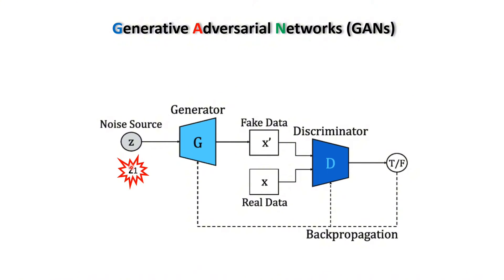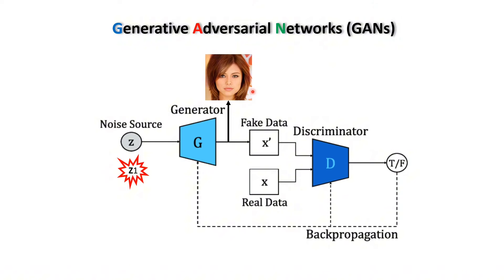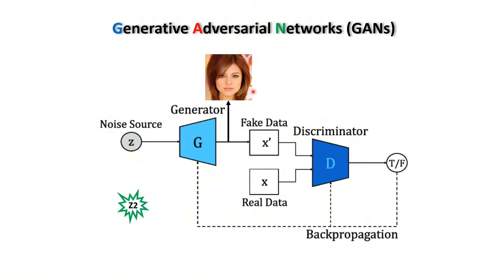For instance, you can provide it with a random noise and you get a new image — a new fake image over here. Ideally, if you change the input random noise, you should expect to get a new image.